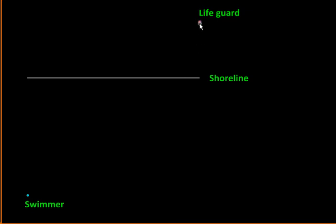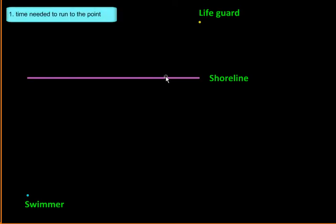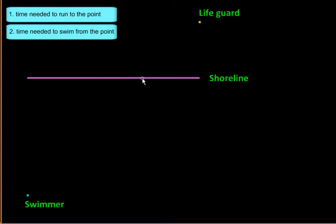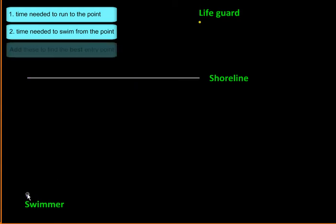The lifeguard needs to find the best point of entry on the shoreline where he can dive in water and swim to the swimmer in the quickest possible way. So we will take this segment of the shoreline, and for every point on this segment we will be finding two times: number one, time required to run to that point, and then time required to swim from that point to the swimmer.